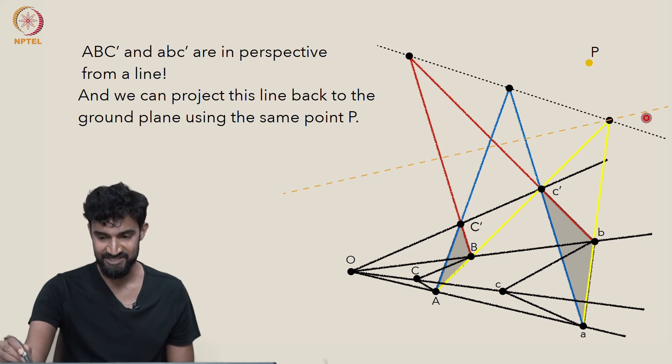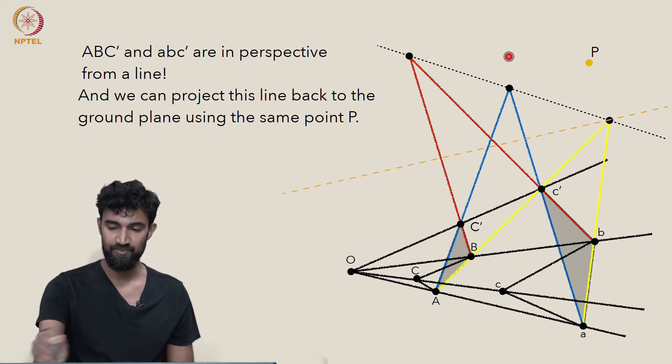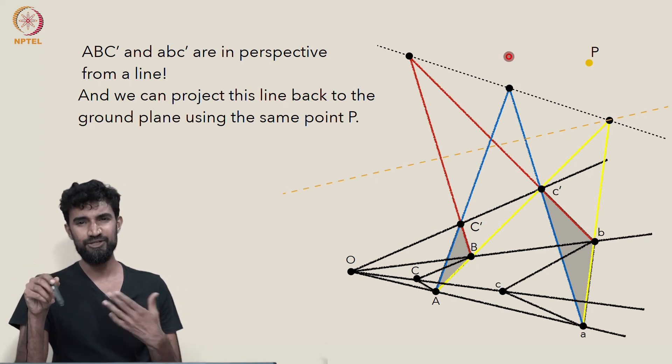So the projection of the axis isn't going to touch this point that's going to stay there. But the other two points are going to get projected somehow. So it's going to be a new axis,